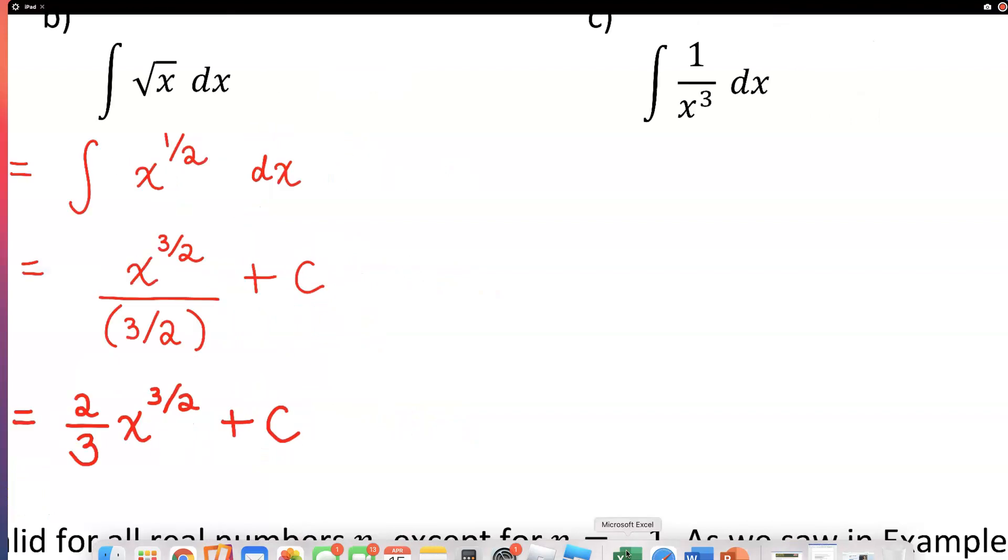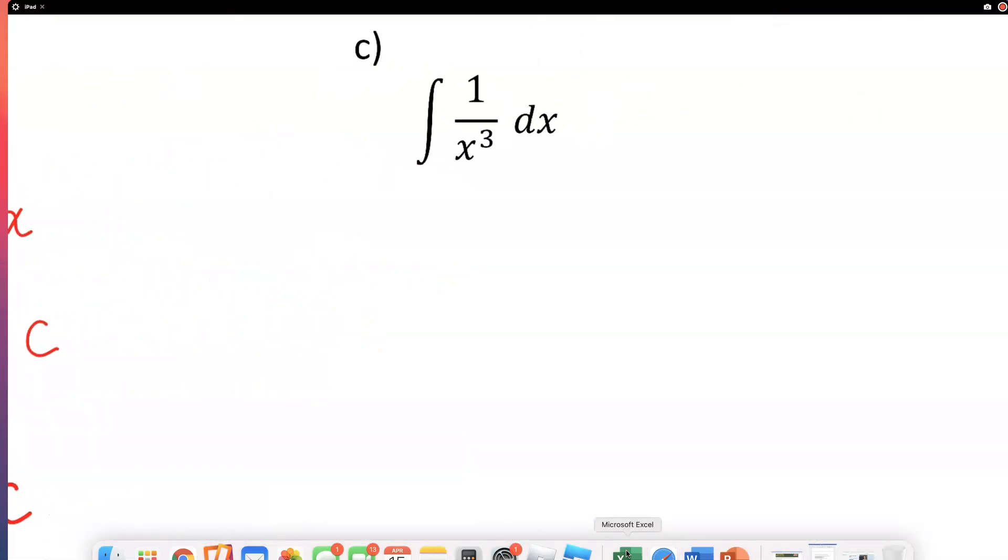Let's look at the third one. First of all I need to rewrite it so that it has an exponent, so that I can use the power rule. Instead of writing it as one over x to the third, how about we write it as x to the negative third power. And let's apply that rule.